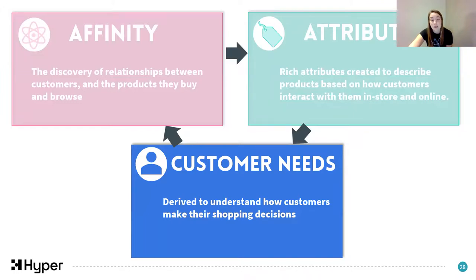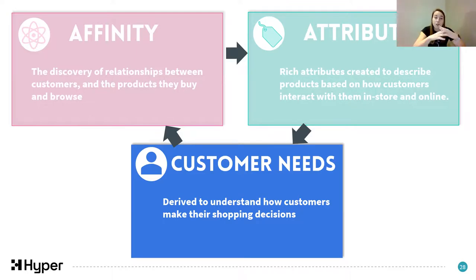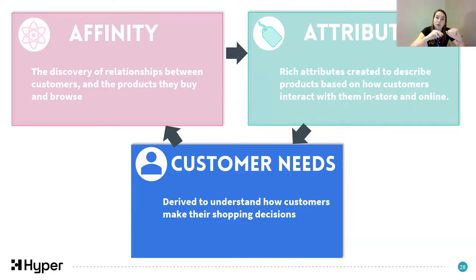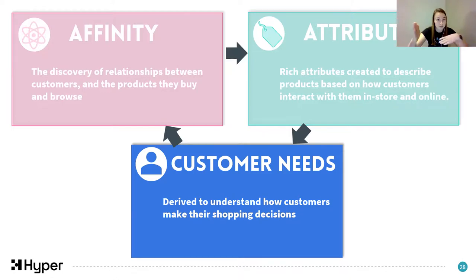Finally, Customer Need States. Customer need states are groups of products that satisfy a particular customer need. You use Affinity and Attributes in combination to get to customer need states: use your affinities to identify which of your products are competing against each other - so you could transfer demand between them - and use attributes to check whether the products within a need state are really similar to each other.